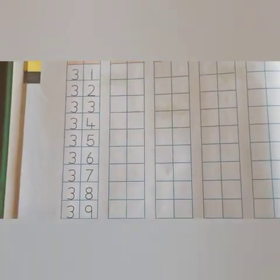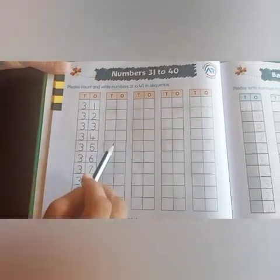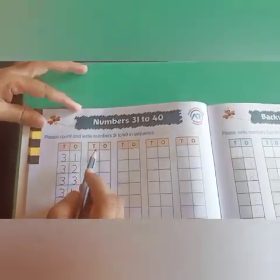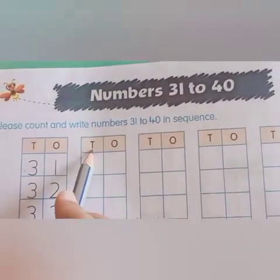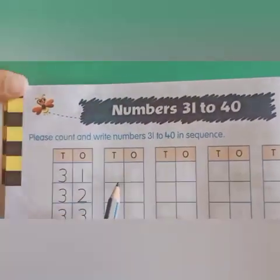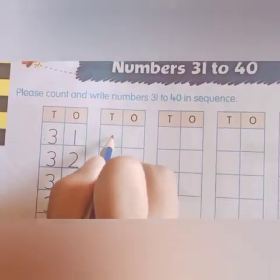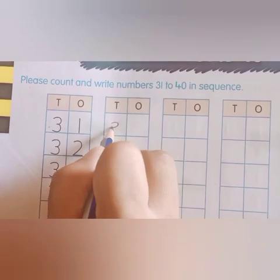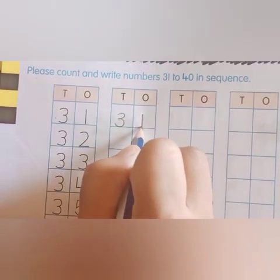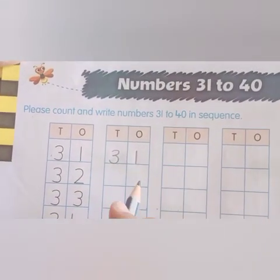Now, students, we will write these numbers here. T means tens, O means ones. Here, we will write numbers. Touch the numbers, touch the box and write numbers. 31, 31.